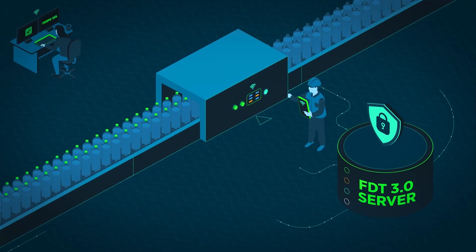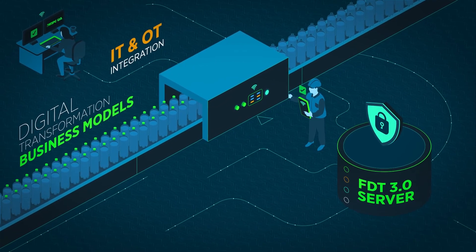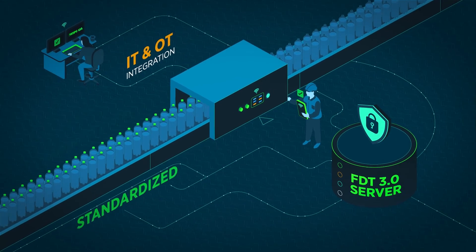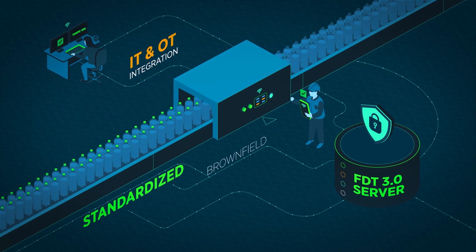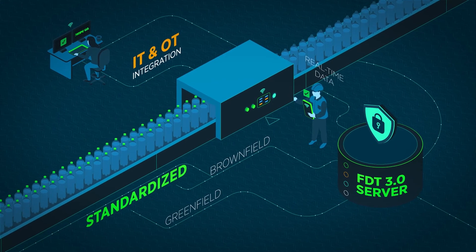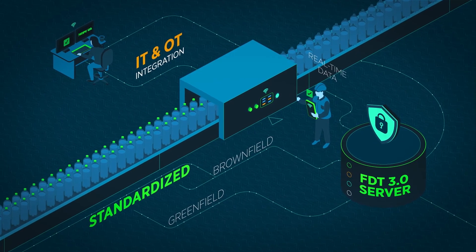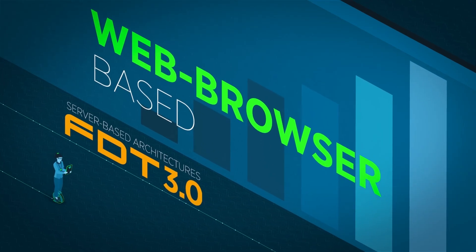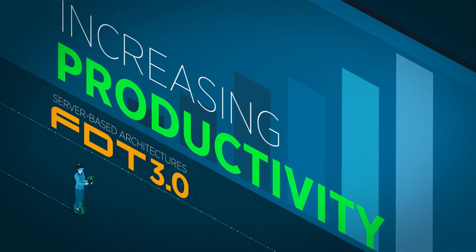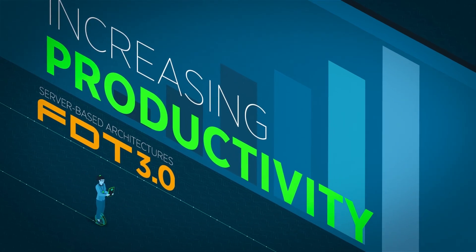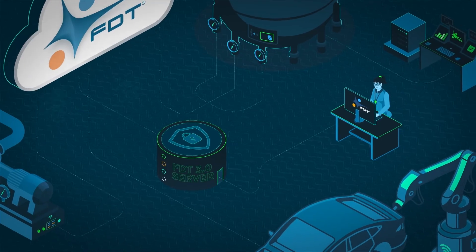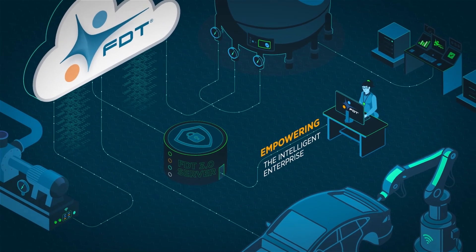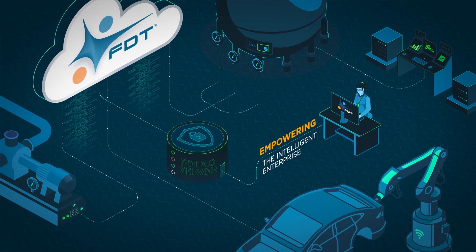Here's the bottom line. Customers pursuing digital transformation business models can leverage FDT server-based architectures, driving standardized innovation to both brownfield and new greenfield operations with real-time, information-driven, service-oriented features, optimizing automated processes and connectivity, increasing productivity while creating a safer workplace. You can rely on FDT to empower an intelligent enterprise through a smart, connected automation ecosystem.